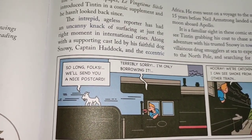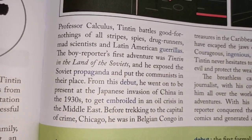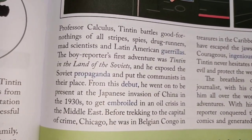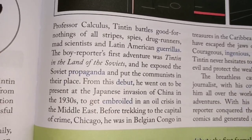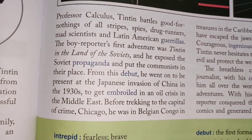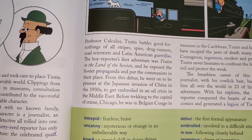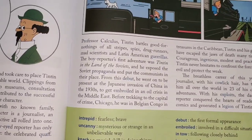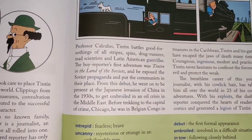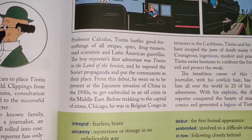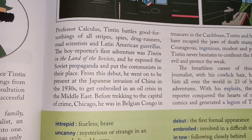Tintin has always been supported by a faithful dog and the eccentric Professor Calculus. Tintin battles good-for-nothing villains, spies, drug runners, mad scientists, and Latin American dictators. The boy reporter's first adventure was Tintin in the Land of the Soviets, where he exposed Soviet propaganda and put the communists in their place. Propaganda means false allegations, rumors, or misinformation spread by a political party to gain the support or sympathy of the people.